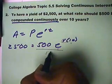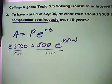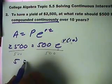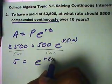First, I'm going to divide everything by 500. This will give me 5 equals e raised to the 10r.